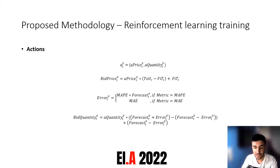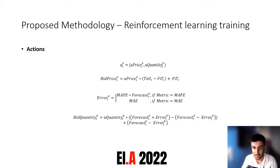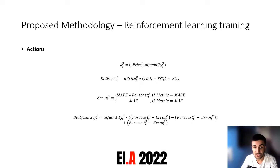For the energy amount to transact, the first step is to obtain the forecast error — we use two metrics: the Mean Absolute Percentage Error (MAPE) or the Mean Absolute Error (MAE). Then, just like the price, we frame the energy amount action between the minimum and maximum possible values, which are basically the forecast minus the error or the forecast plus the error.